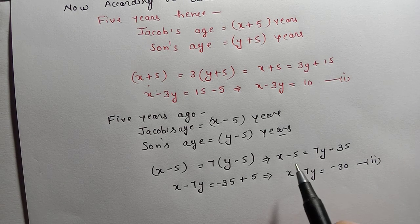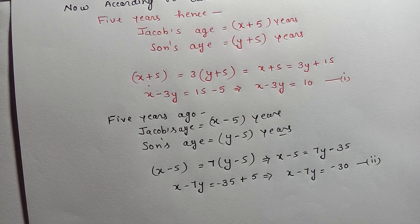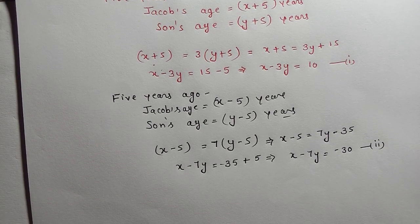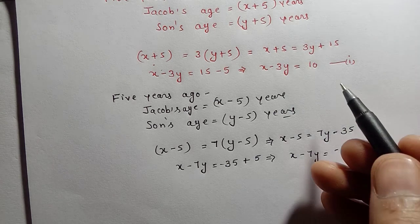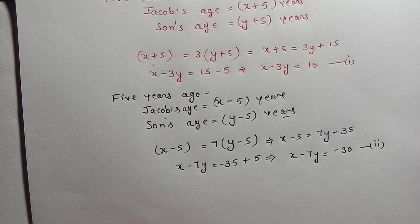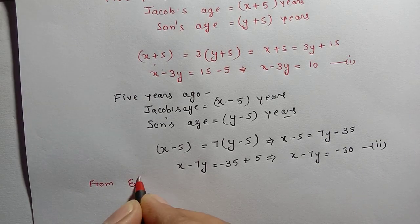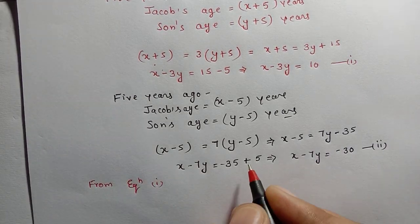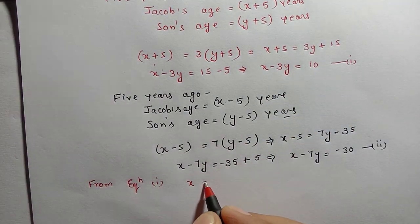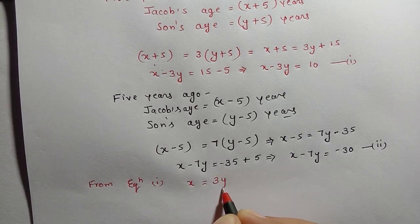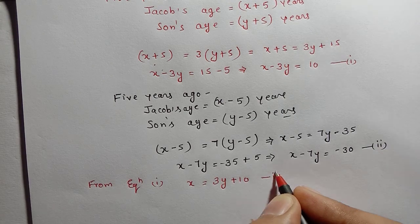Now we will use the substitution method. We will find the value of one variable from one equation and substitute it into the other. Taking Equation 1: x − 3y = 10, we get x = 3y + 10. This is Equation 3.